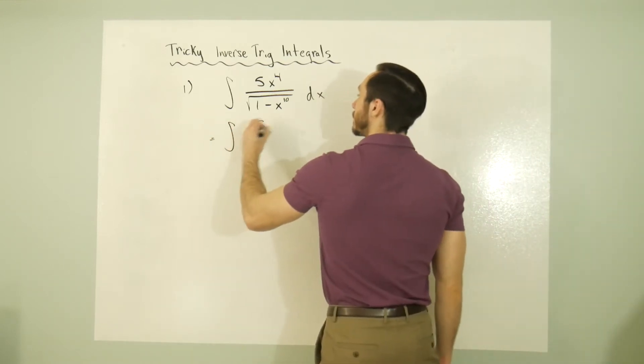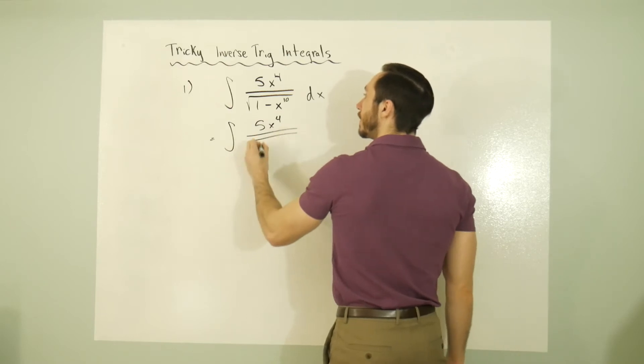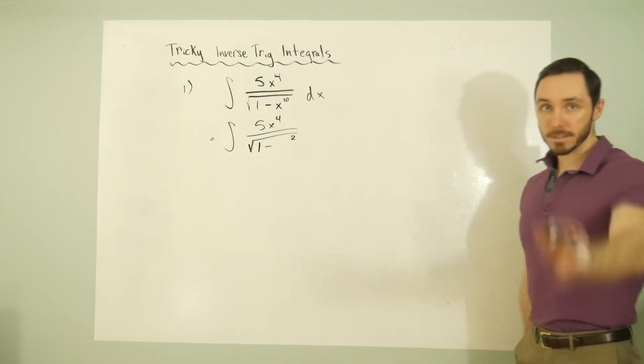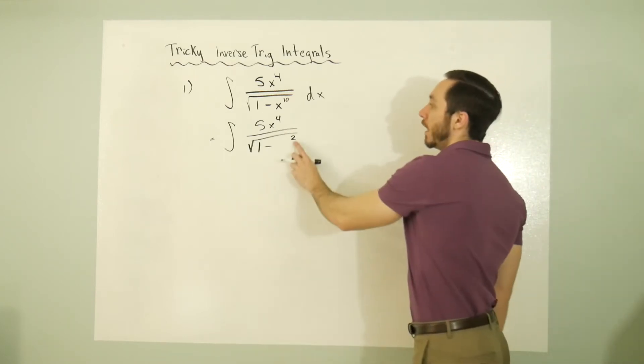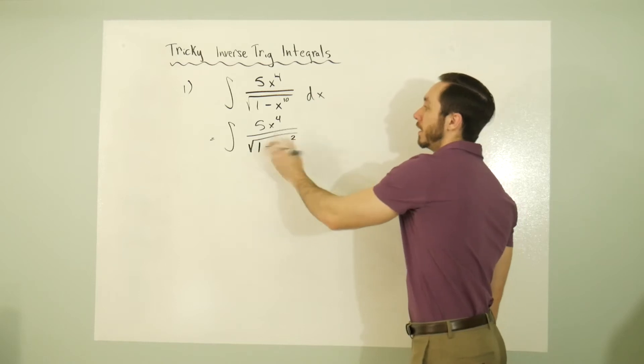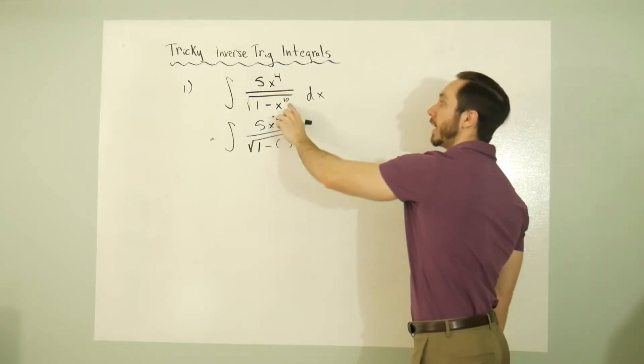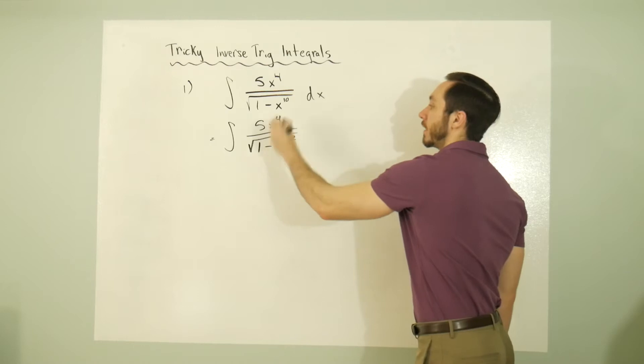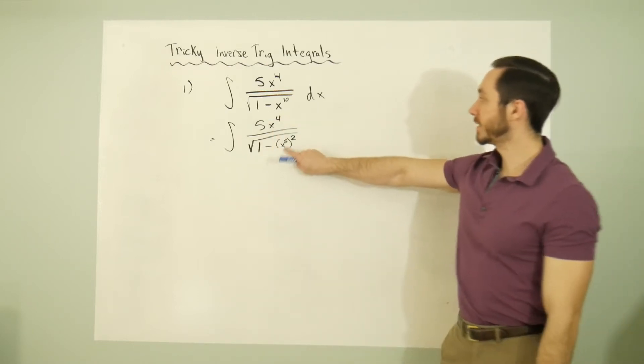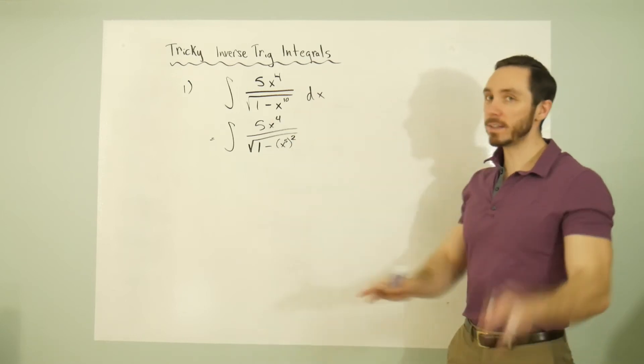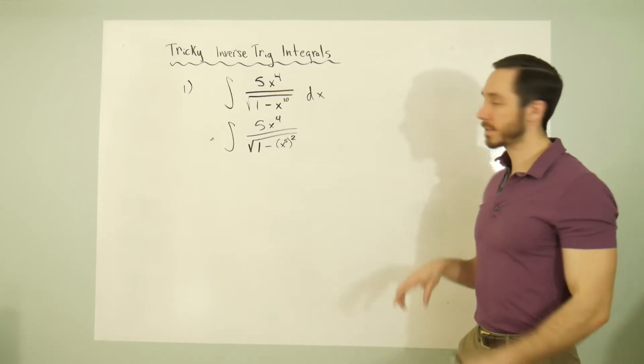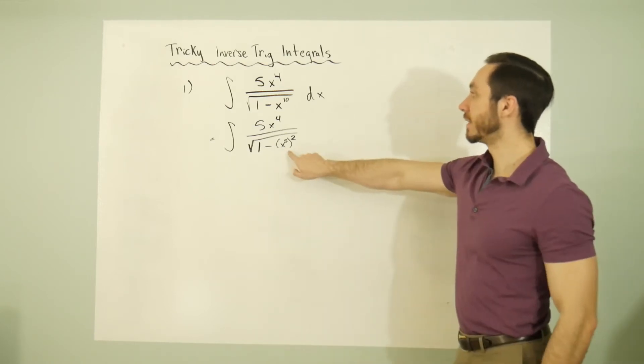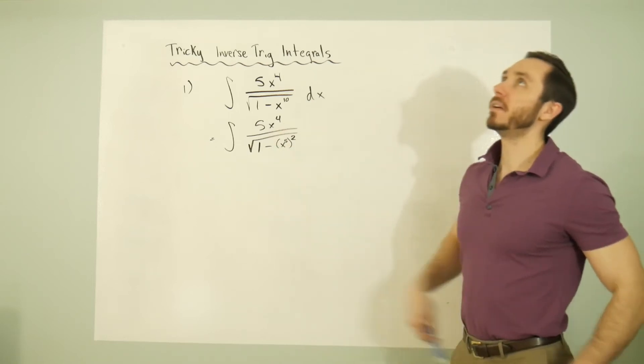Let's rewrite this as the integral of 5x^4 over the square root of 1 minus... I want to make this a square somehow. How can I make this a square? Well, if this was x^5, then squared, it's x^10. These are equivalent expressions: x^5 then to the second is x^10. And now it's starting to take on that form of the derivative of arcsine a little bit more.